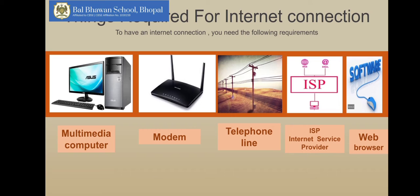When computers connect to each other on the same network, it is called a Local Area Network, or LAN. When multiple networks are connected with each other, it is called a Wide Area Network, or WAN. With this type of network, your home has a network router that connects to your ISP. Many of you must be using Wi-Fi connections and you have seen all these things at your place.